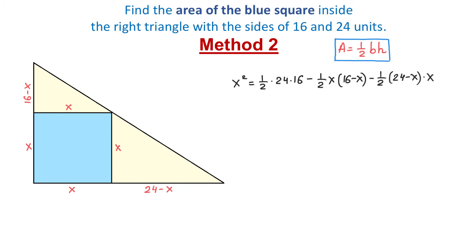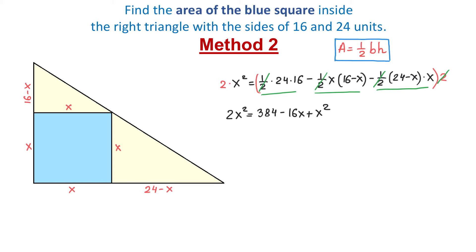To solve this equation, first we multiply both sides by 2 to eliminate the fractions. On the left side we have 2x squared. On the right side, 24 times 16 is 384. Removing parentheses by multiplying through gives negative 16x plus x squared, and negative 24x plus x squared. Combining like terms on the right side gives 384 minus 40x plus 2x squared.